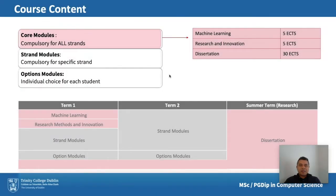Regarding course content: all students across all four strands take a number of core modules. These include machine learning, which is considered fundamental to all four specialization areas and ubiquitous in all areas of computer science research and industry. The second core element is a research and innovation module — a five-credit module that teaches the basics of putting together a research proposal, elements of research methodology, and skills and knowledge about innovation and how novel ideas can be used to create a startup company. The third core component is the research dissertation itself, worth a full semester of credits.